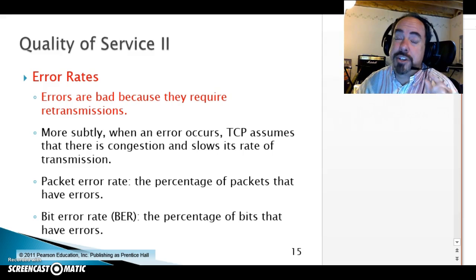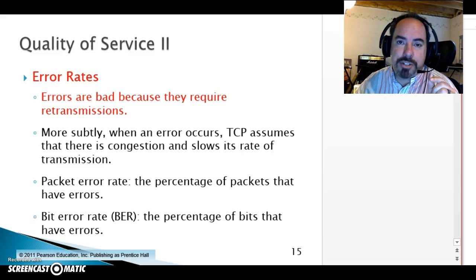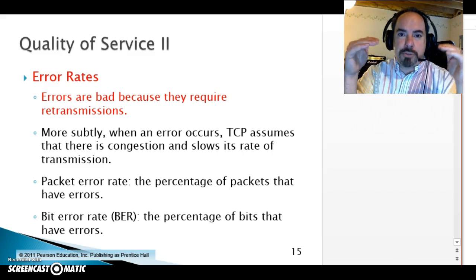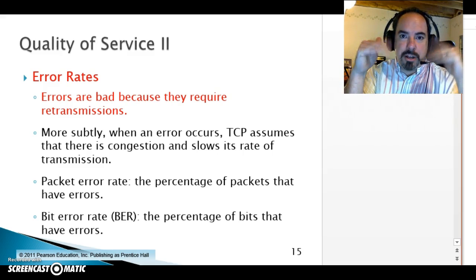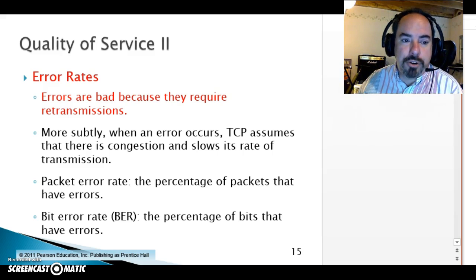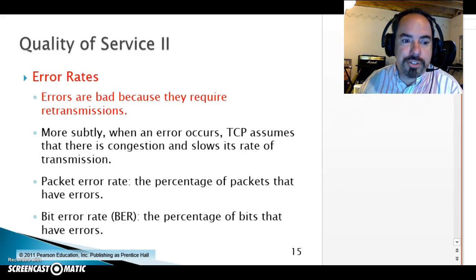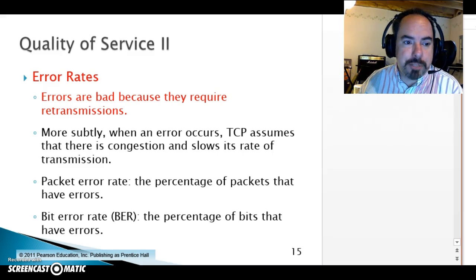Cisco used to be bad about this — you sometimes had to manually hard-code the duplex setting because if you left it on auto, especially when a Cisco device was talking to another brand, they couldn't auto-negotiate correctly and kept flickering back and forth. Hard-coding the duplex setting on both sides can be very helpful, in my personal experience.